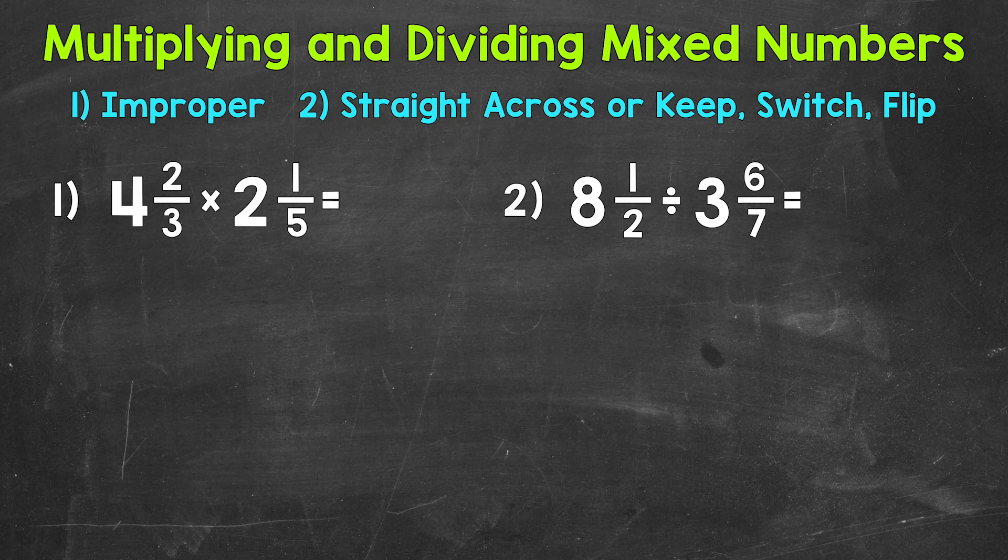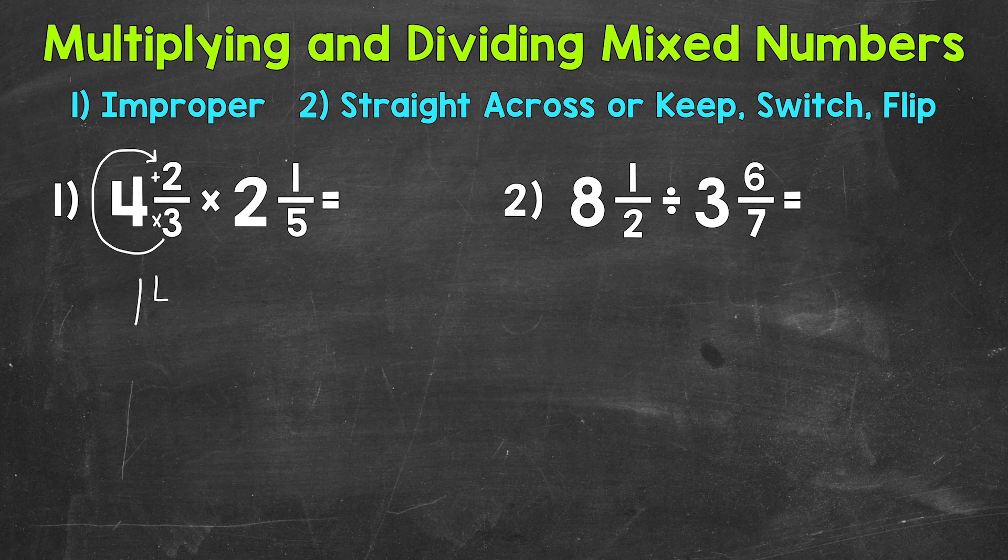We do that by multiplying and then adding. Let's convert 4 and 2 thirds to an improper fraction. So we start at the bottom and work our way to the top. We multiply and then add. So 3 times 4 is 12, plus 2 is 14. 14 is our numerator. We keep the denominator of 3 the same. So 14 thirds is 4 and 2 thirds, and we converted it to that improper fraction.